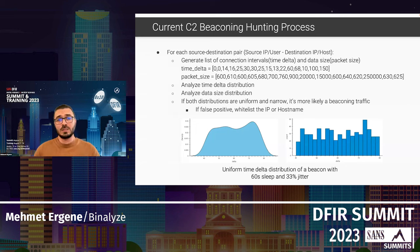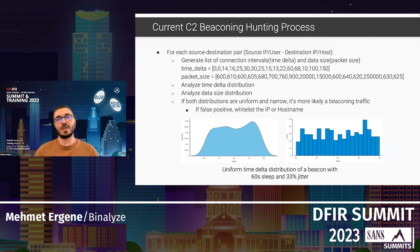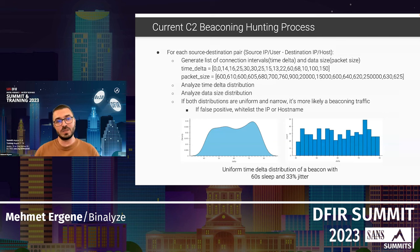On the left you can see an example of a beacon with a 60-second sleep and 33% jitter. If you find the connection intervals and list them, the count of each time delta is somewhere around 25 — fairly uniform. On the right you can see the density representation of that distribution. I know this is a bit high-level, so I'll go into more detail about this process.